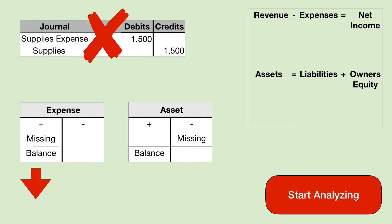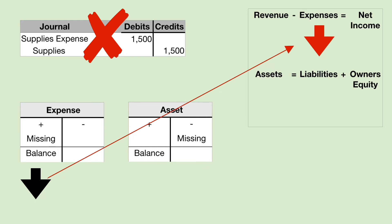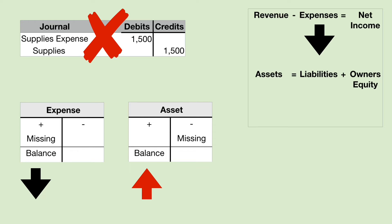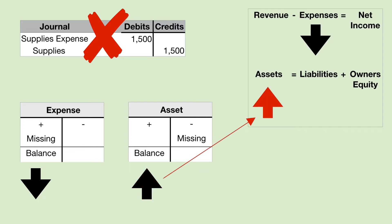Now let's start thinking. If we're missing a debit in the expense account, which is supposed to have all debits in it, then the balance is going to be understated. The effect of expenses being understated is shown in that red arrow on the income statement. Now let's look at the asset category. If we're missing a credit to an asset account, and asset accounts are supposed to have a debit balance, then the balance will be too large because we neglected to subtract something. This error carries over to the balance sheet — assets are overstated, as indicated by the red arrow.